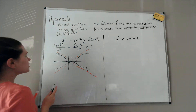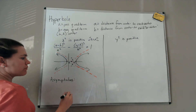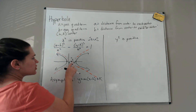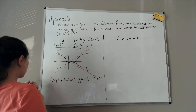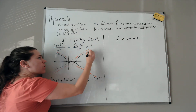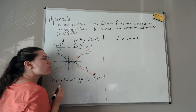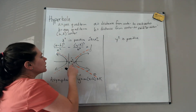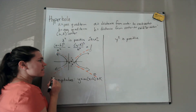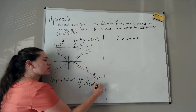The asymptotes are written in graph translation form as y equals plus or minus (b/a) times (x minus h) plus k, where h, k is the center. The slope is b over a for asymptote one — you rise b units and go over a units — and negative b over a for asymptote two, going down b to the right a.